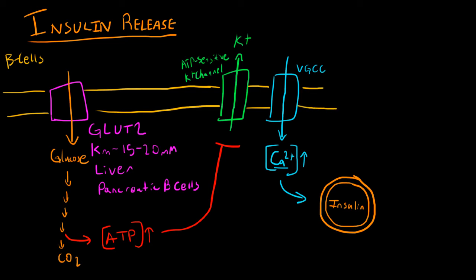So calcium will bind to these calcium sensors on the surface of these vesicles. And that will tell the vesicle to go bind to the membrane. So it will actually integrate itself into the lipid bilayer membrane. And by doing so, we're going to release all of the insulin that was stored inside of this vesicle into your blood.